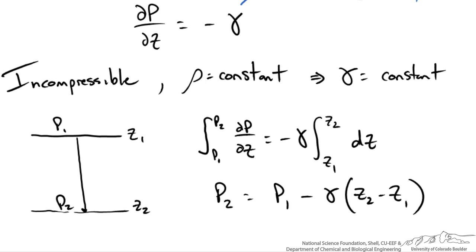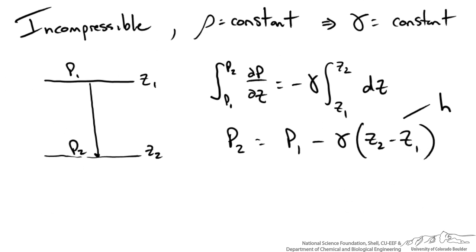Now it is more common that you might see this as h, or the height from z2 to z1. So that being the case, p1 is also equal to p2 plus gamma h. So there is our linear relationship between pressure and the height of a fluid with specific weight gamma.